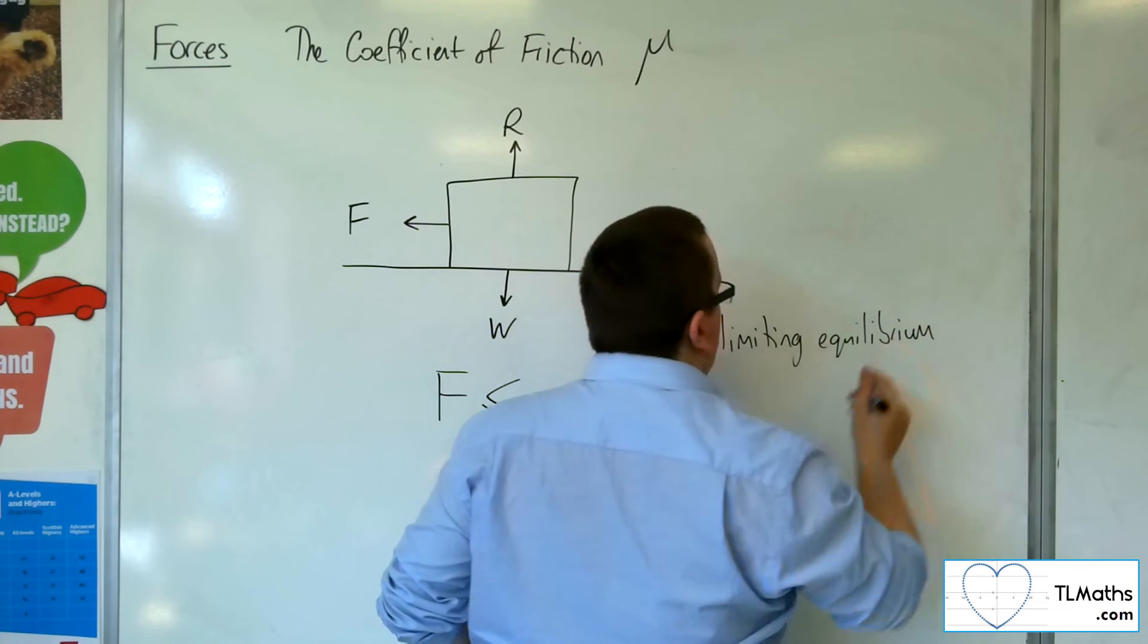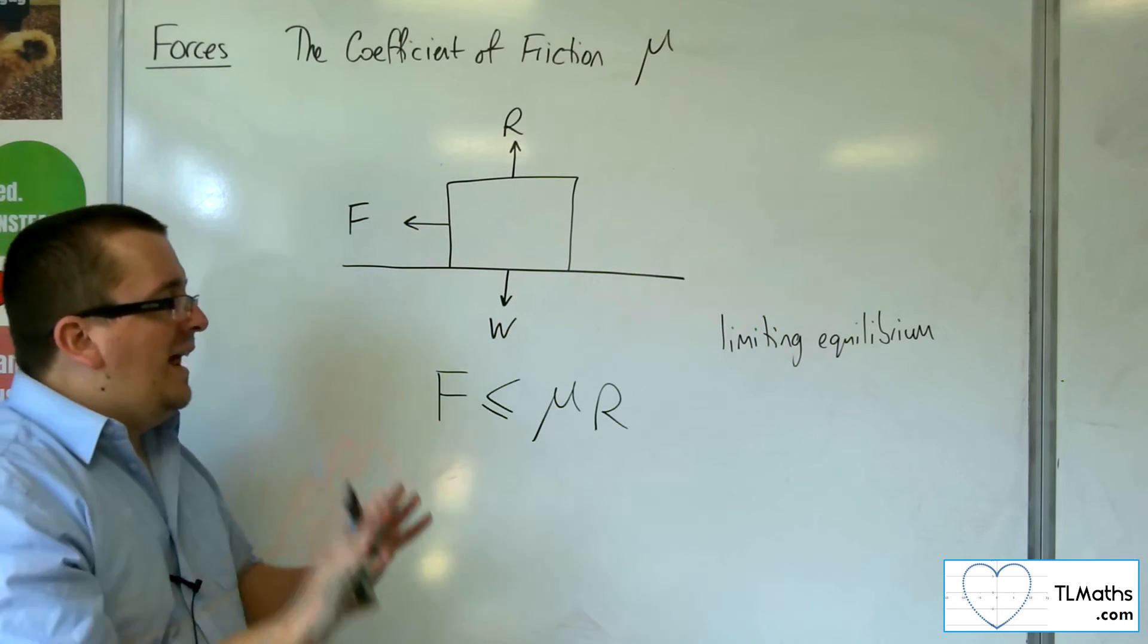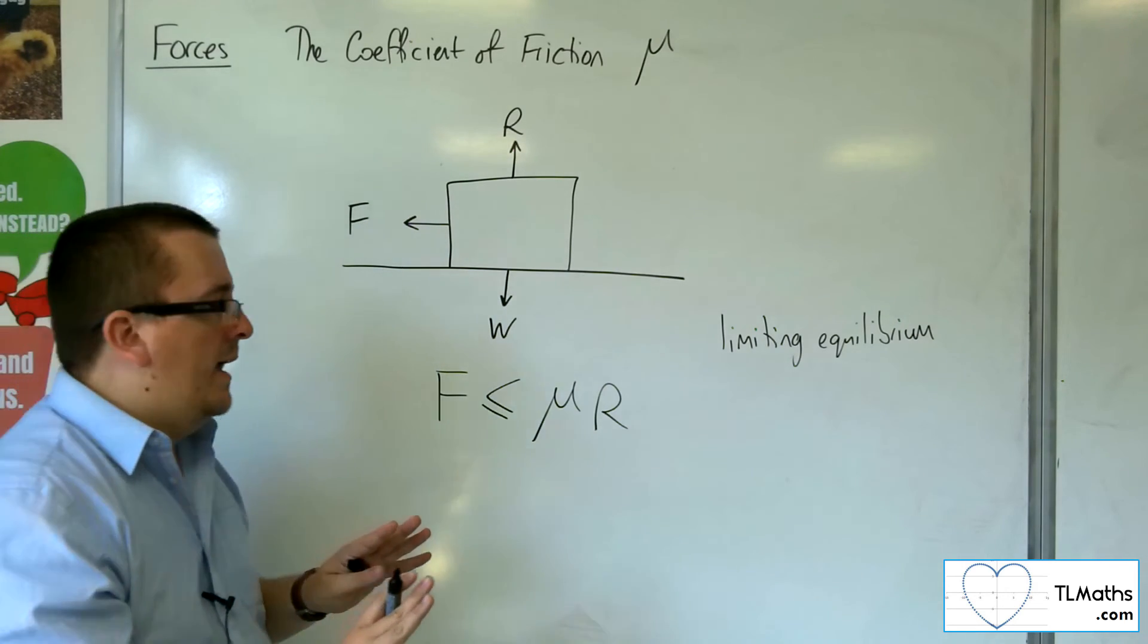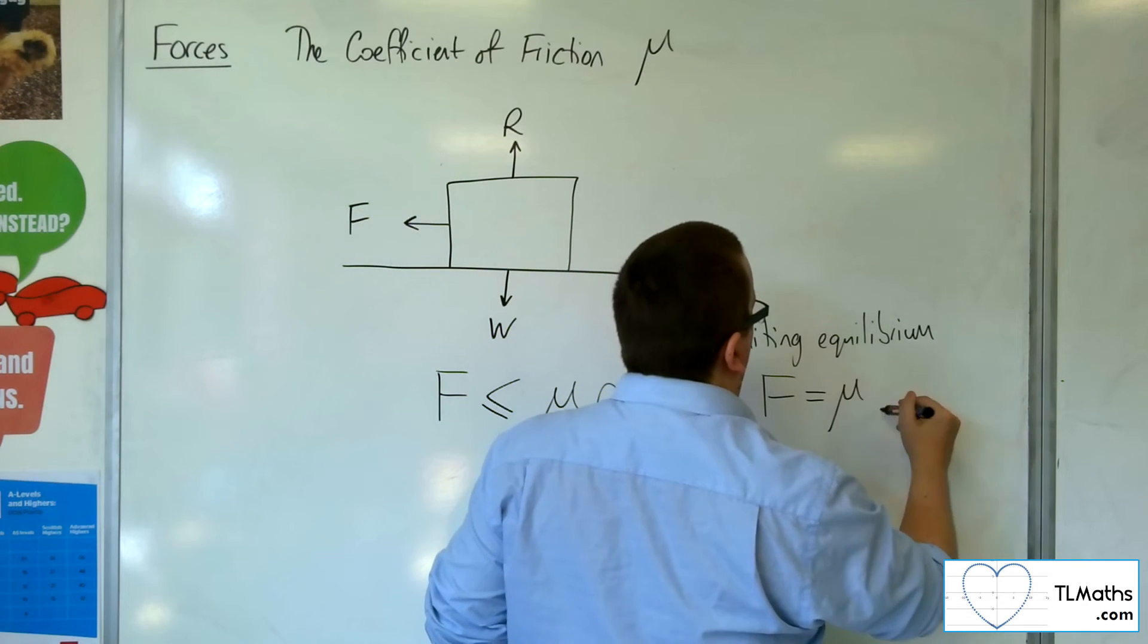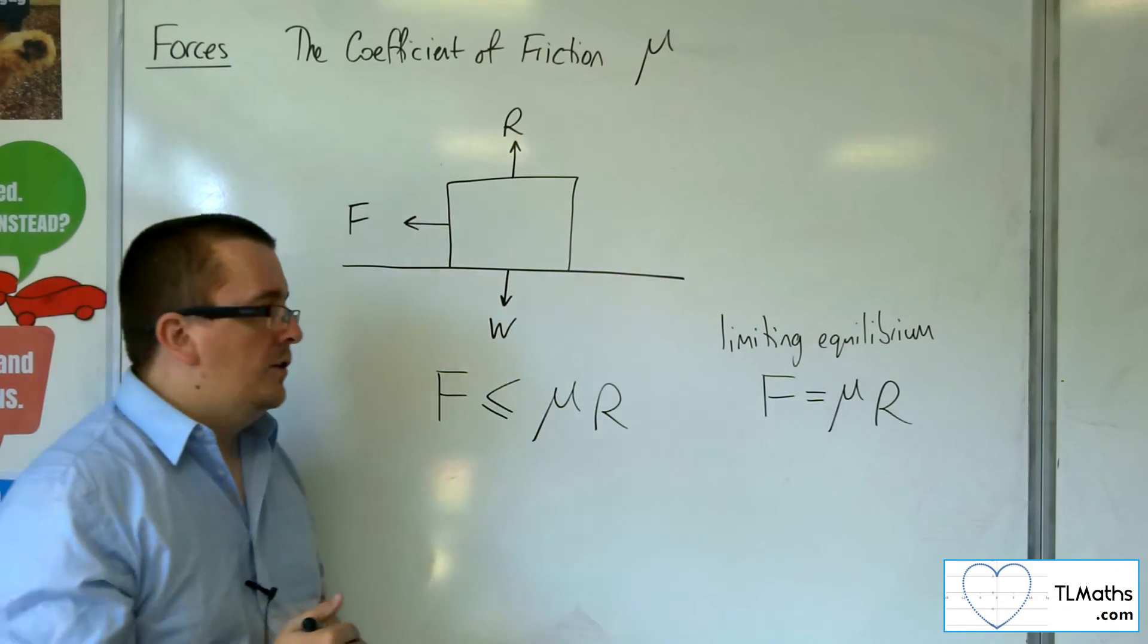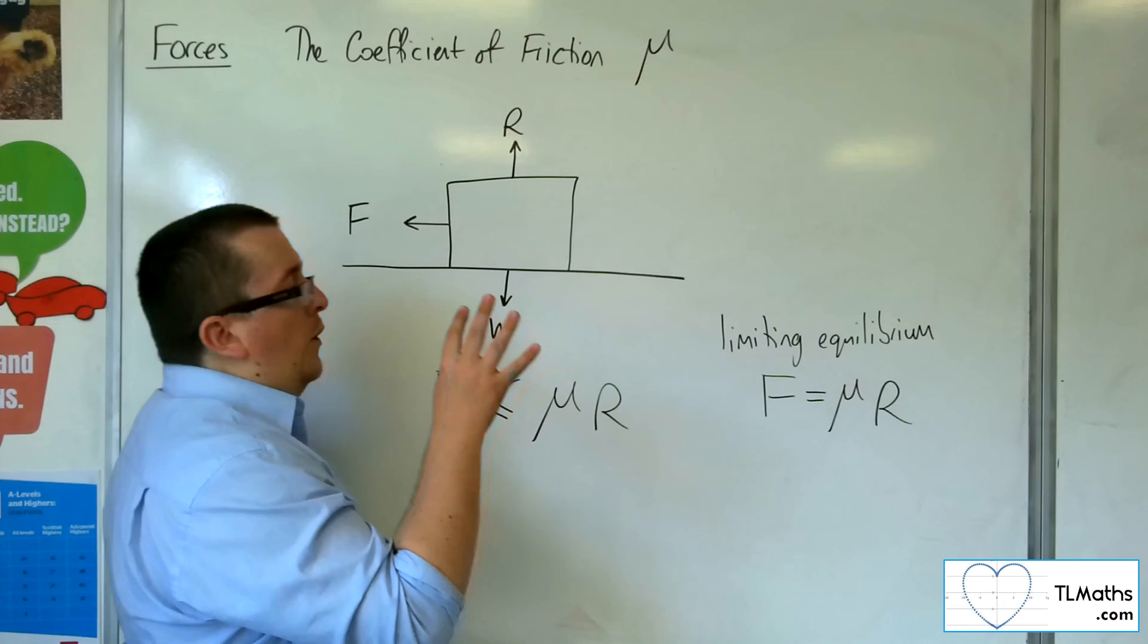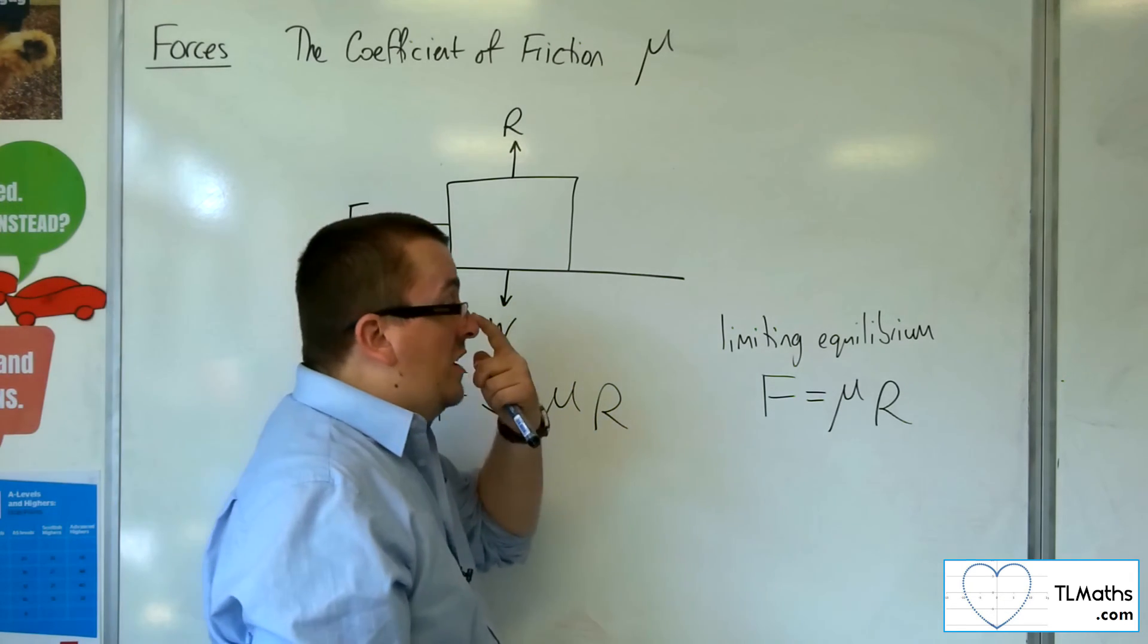It's on the point of tipping. At that point, we have that the friction force is equal to μ times the normal reaction force. When we're in limiting equilibrium, F equals μ times R.